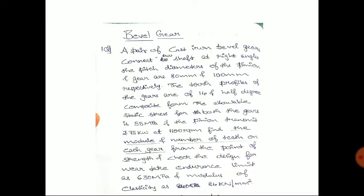The problem: a pair of cast iron bevel gears connect two shafts at right angles. The pitch diameters of the pinion and gear are 80 mm and 100 mm respectively. The tooth profiles are of 14.5 degree composite form. The allowable static stress for both gears is 55 MPa. The pinion transmits 2.75 kW at 1100 rpm. Find the module and number of teeth on each gear for strength, and check the design for wear.